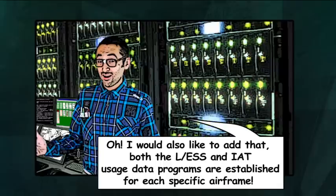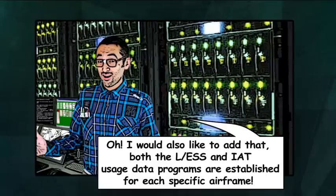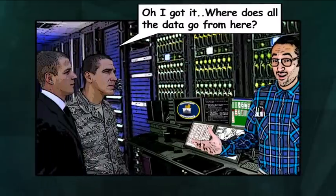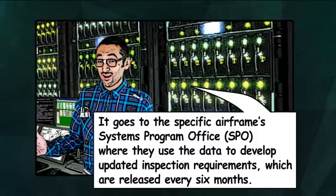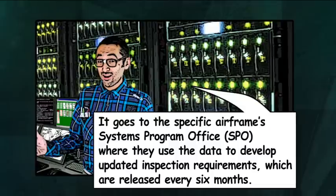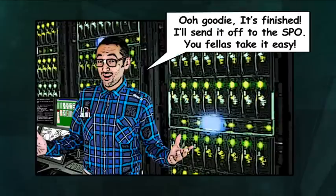Both the Loads Environment Spectra Survey and individual aircraft tracking usage data programs are established for each specific airframe. Where does all the data go from here? It goes to the specific airframe's systems program office, where they use the data to develop updated inspection requirements, which are released every six months. It's finished. I'll send it off to the SPO.